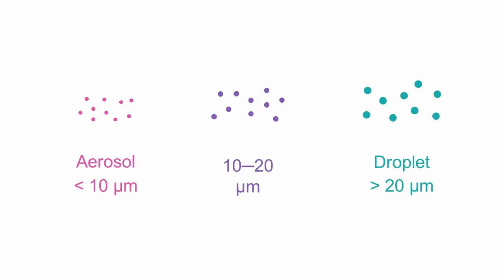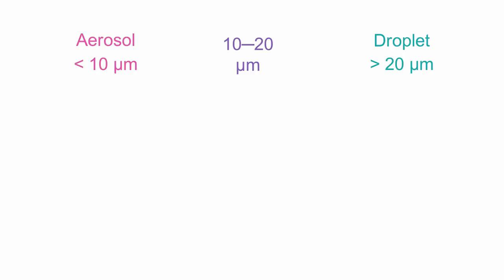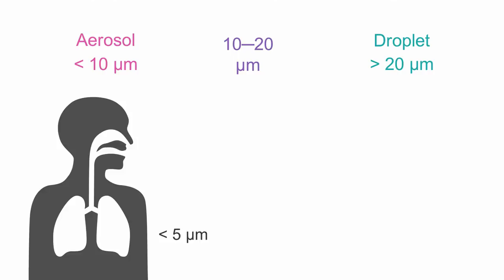There are also in-between sized particles of 10 to 20 microns that can have somewhat of an intermediate behavior, but are generally thought to fall to the ground like droplets. There's an even more granular distinction: those below 5 microns are so small that they can travel all the way down into the alveolar space, where they can cause pneumonia, whereas particles below 10 and above 5 microns can only penetrate below the glottis and are thought to land somewhere in the tracheal branch.